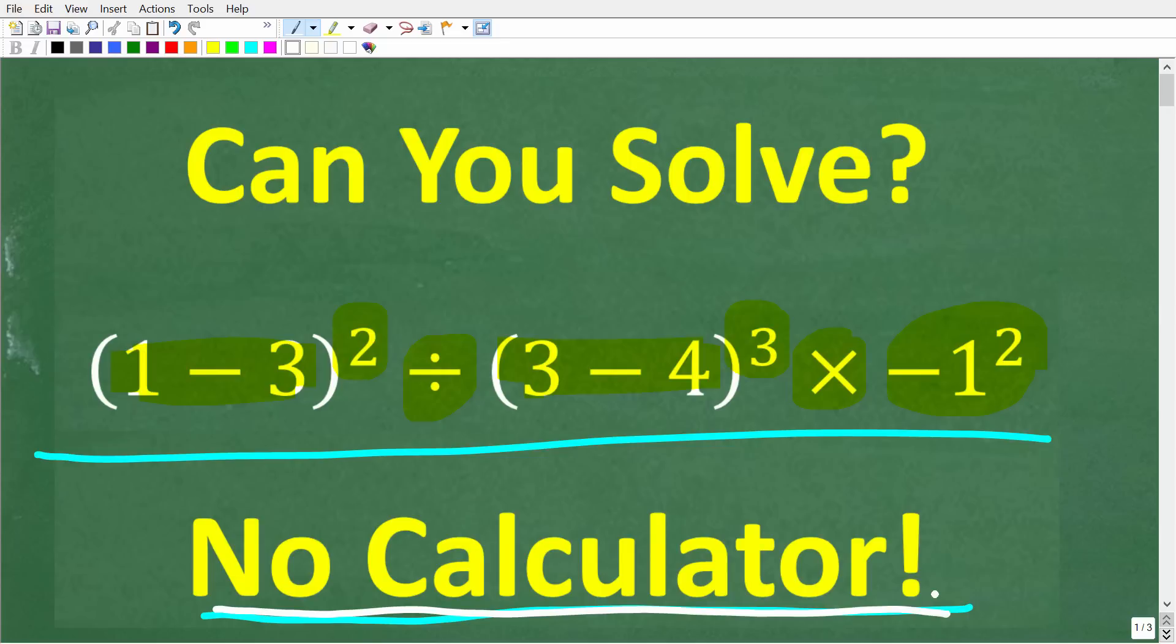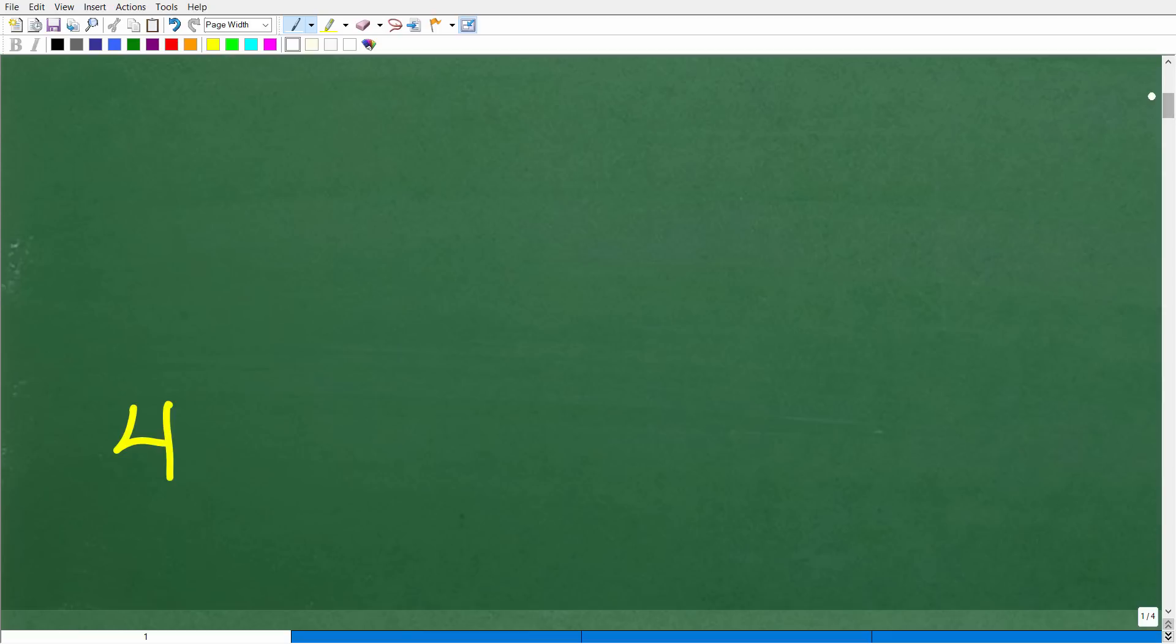I'm going to show you the correct answer in just one second. Then of course, I'm going to solve this problem step by step. There's a couple of places in this particular problem that will confuse a lot of you. So one more time, we have 1 minus 3 squared divided by 3 minus 4 cubed times negative 1 squared.